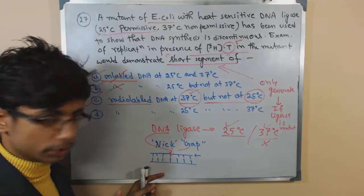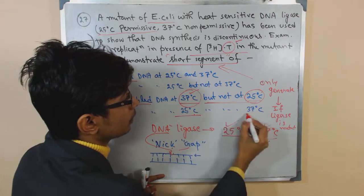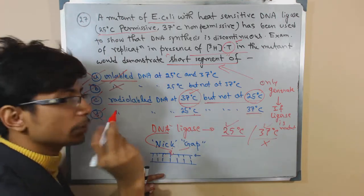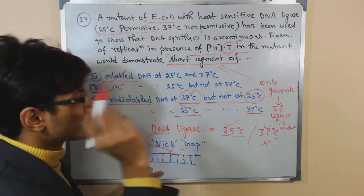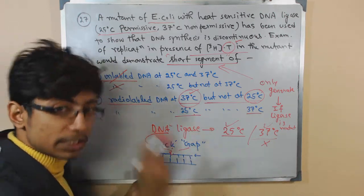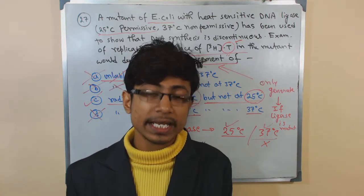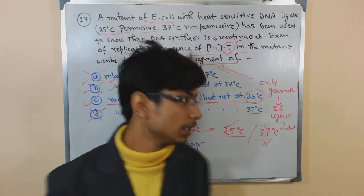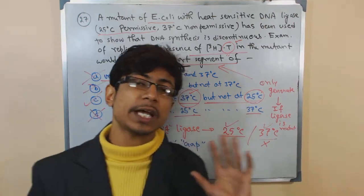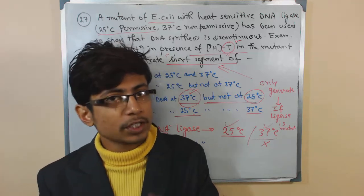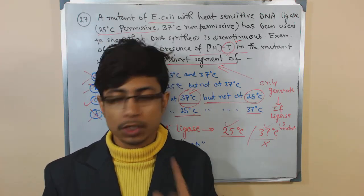Fourth one is: we get short segment at 25 but we won't get at 37. It is not true, because we surely won't get any short segment at 25. So the right option here is option C, because the DNA ligase will only produce short segments when it is not working, and it will not work at 37, so it will find at 37 but not at 25. So that's the right answer. This type of problem, you need to think about some special features of the enzymes, how they work, and that's why I love these problems. Go for it.